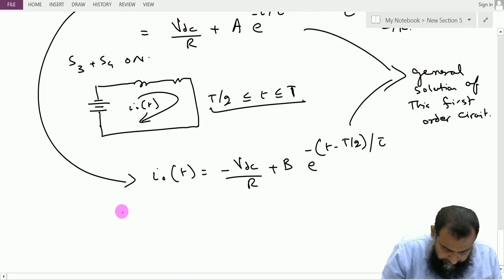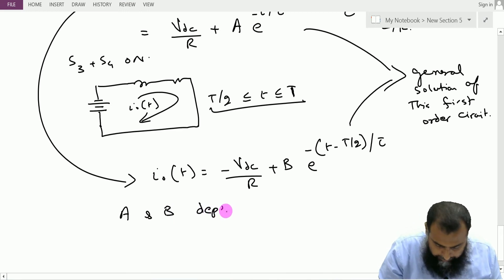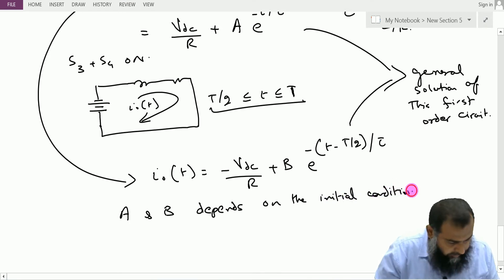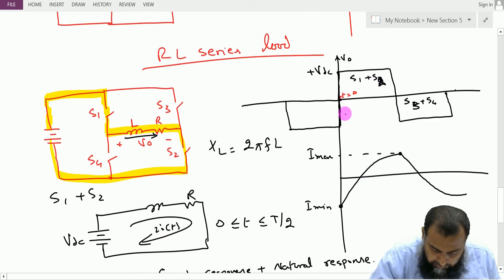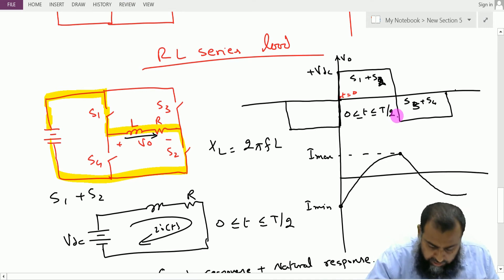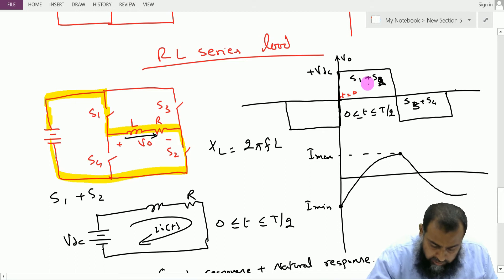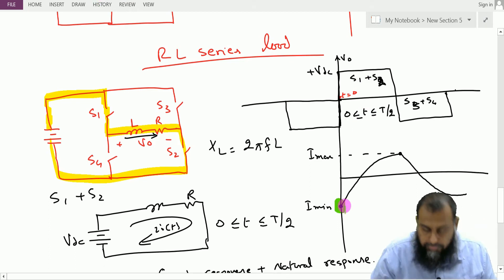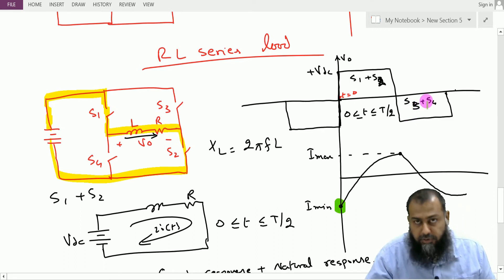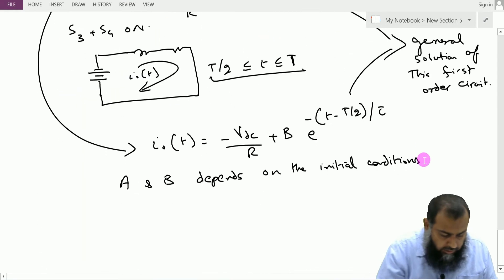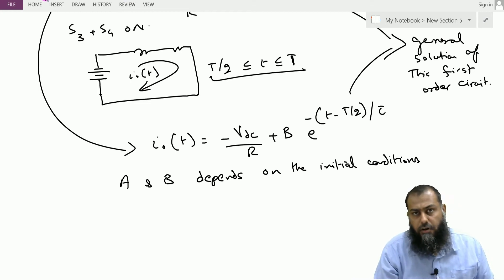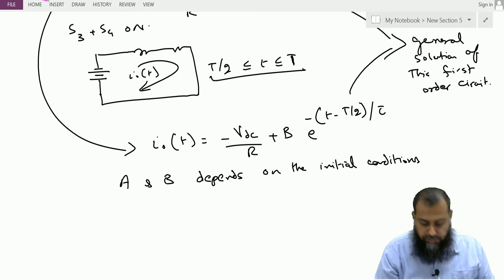Evaluating at t = 0 for the first equation: i(0) = VDC/R + A = I_min, giving A = I_min − VDC/R. Evaluating at t = T/2 for the second equation: i(T/2) = −VDC/R + B = I_max, giving B = I_max + VDC/R. These coefficients are substituted back to give the particular solution for the output current.